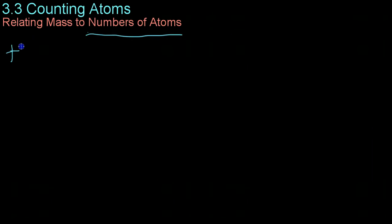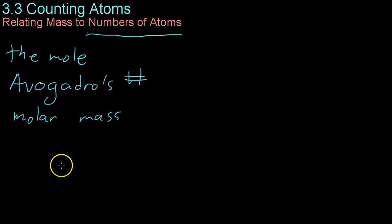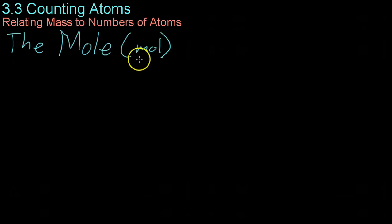The first is what is known as the mole. The second is a constant called Avogadro's number. And the third and final thing is going to be molar mass. And we can't get to molar mass until we've covered the first two. So first, the mole.